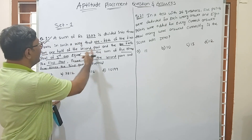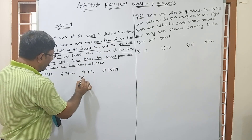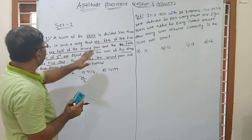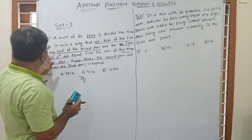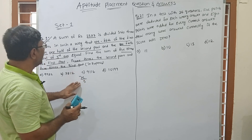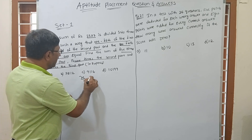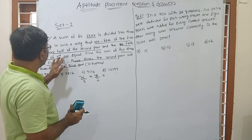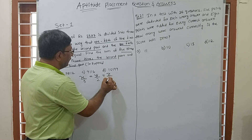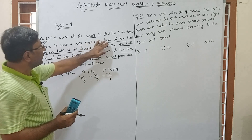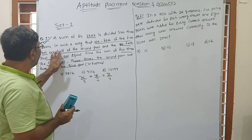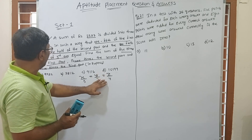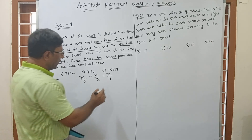For this type of question, a very simple method is used. Suppose the three parts are x, y, and z. One-fifth of the first part means x/5. One-half of the second part means y/2. And one-fourth of the third part means z/4. All three of these are equal — so set them equal to some constant k.